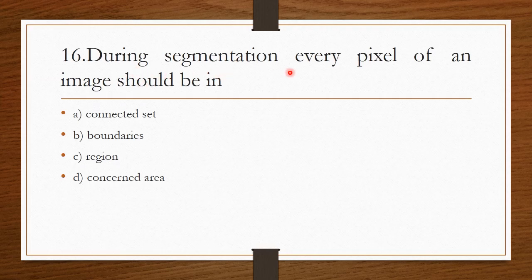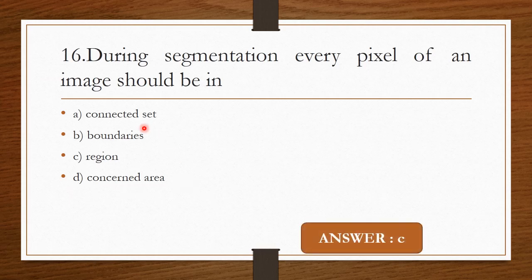Question 15: During segmentation, every pixel of an image should be in — Option A: Connected set. Option B: Boundaries. Option C: Region. Option D: Concerned area. The correct answer is Option C — Region. During segmentation, every pixel of an image should be in the region.